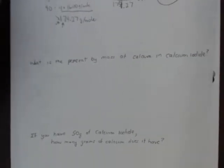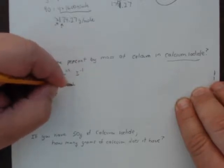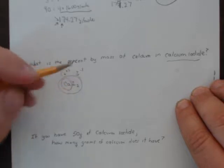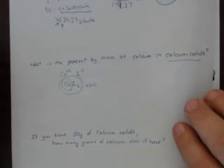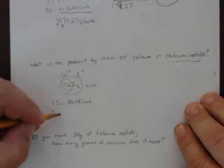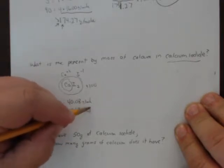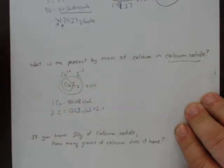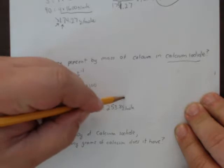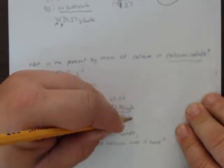Next problem: what is the percent by mass of calcium in calcium iodide? First, figure out the formula — calcium is +2, iodine is −1, so the formula is CaI₂. One calcium is 40.08 grams per mole; two iodines are 2 × 126.9 = 253.8 grams per mole. That totals up to 293.88 grams per mole.